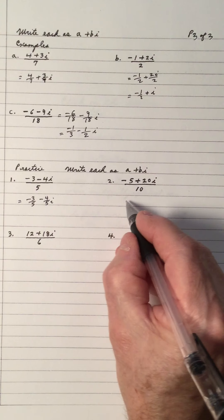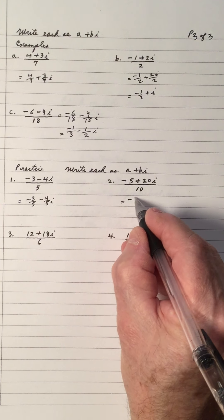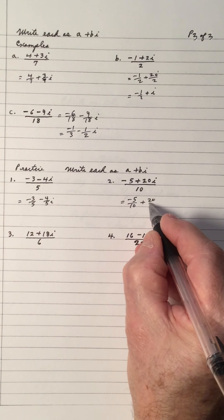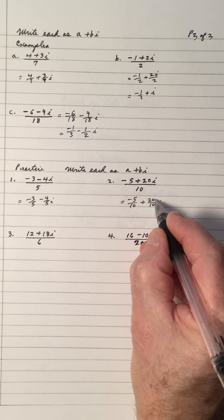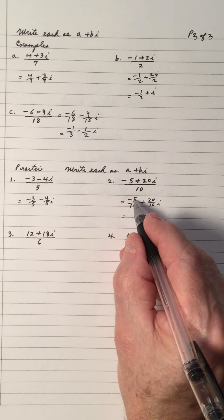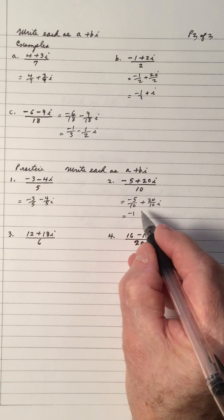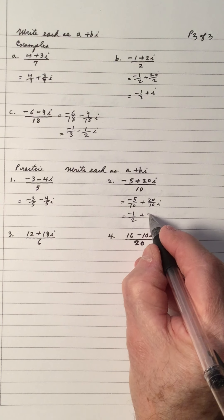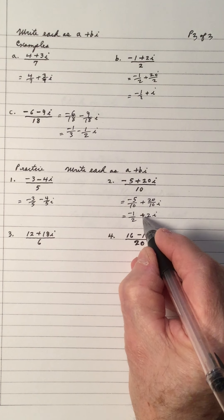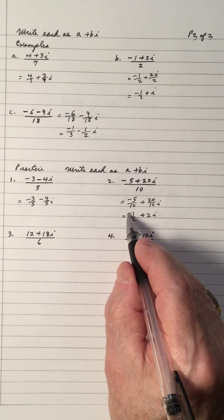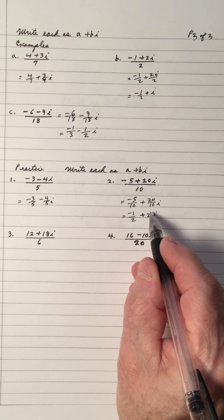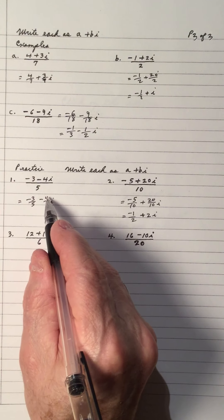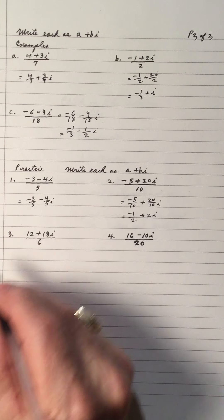And, this one, we have negative 5 divided by 10 plus 20 divided by 10i. And, 5 into 5 goes once, a negative. 5 into 10 goes 2. And, 20 divided by 10 is 2 with an i. Again, this is the real part of negative 1 half is the imaginary part of 2i. The real part is negative 3 fifths. The imaginary part is negative 4 fifths i.